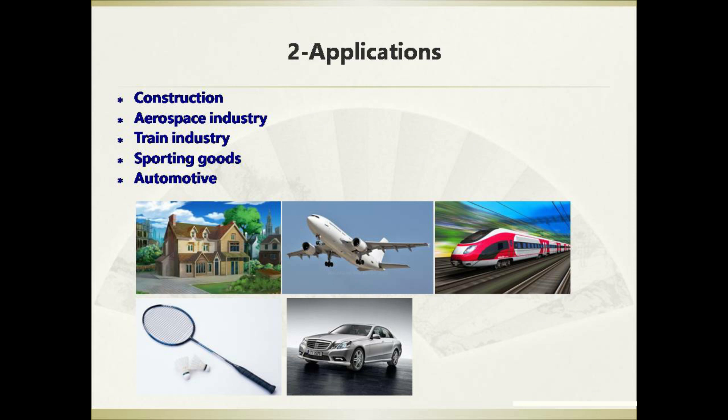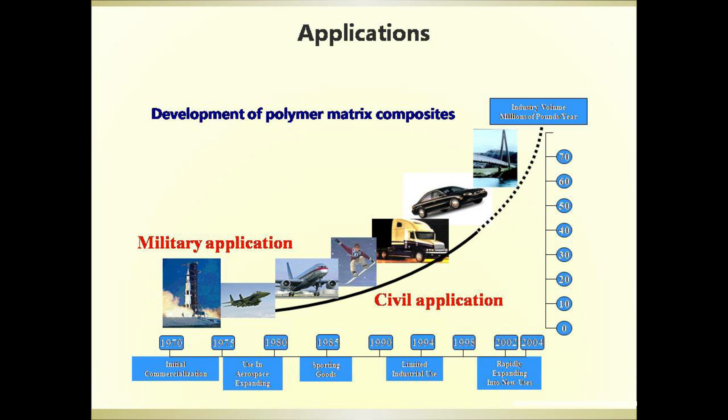Composite materials have a very wide application range, for example, the construction and aerospace industry, train industry, sporting goods, and automotive fields. This figure shows the development trends of polymer matrix composites. We can see that in the 1970s, polymer matrix composites were initially commercialized in military applications. And from 1975 to 1980, polymer matrix composites were used in the aerospace fields.